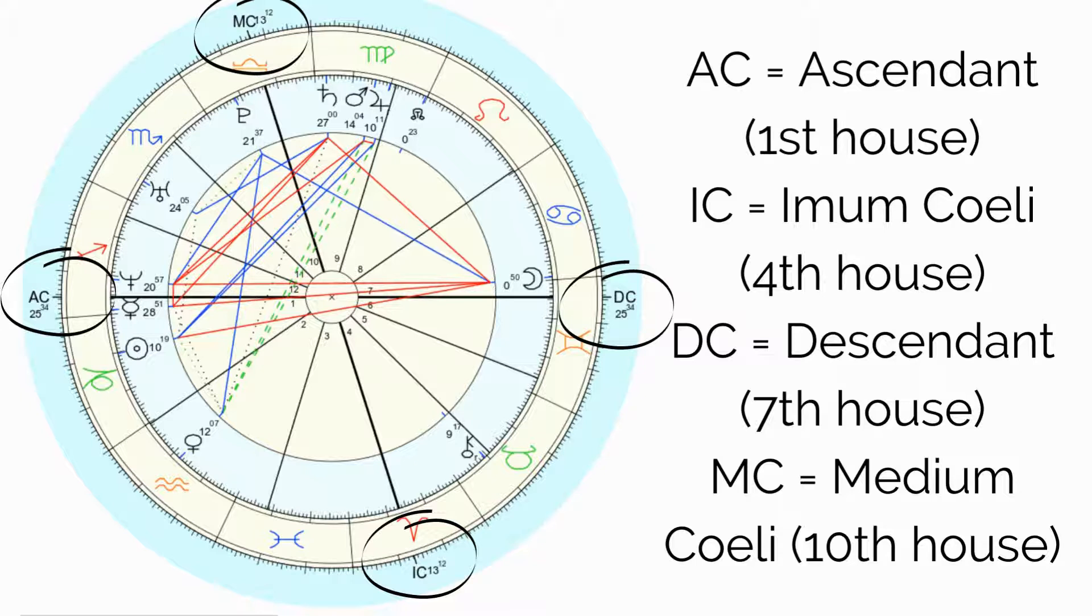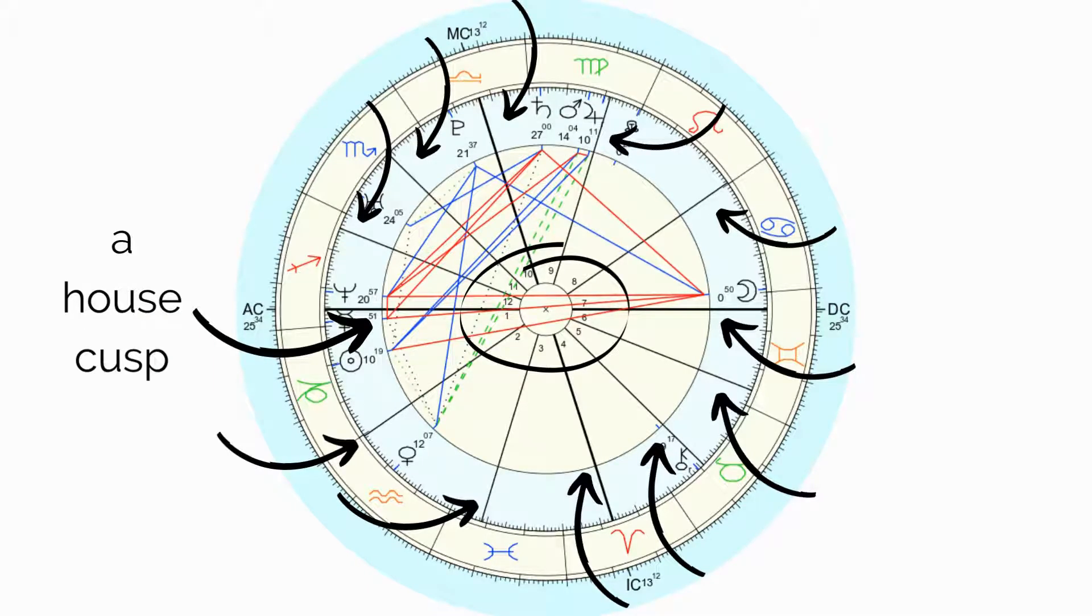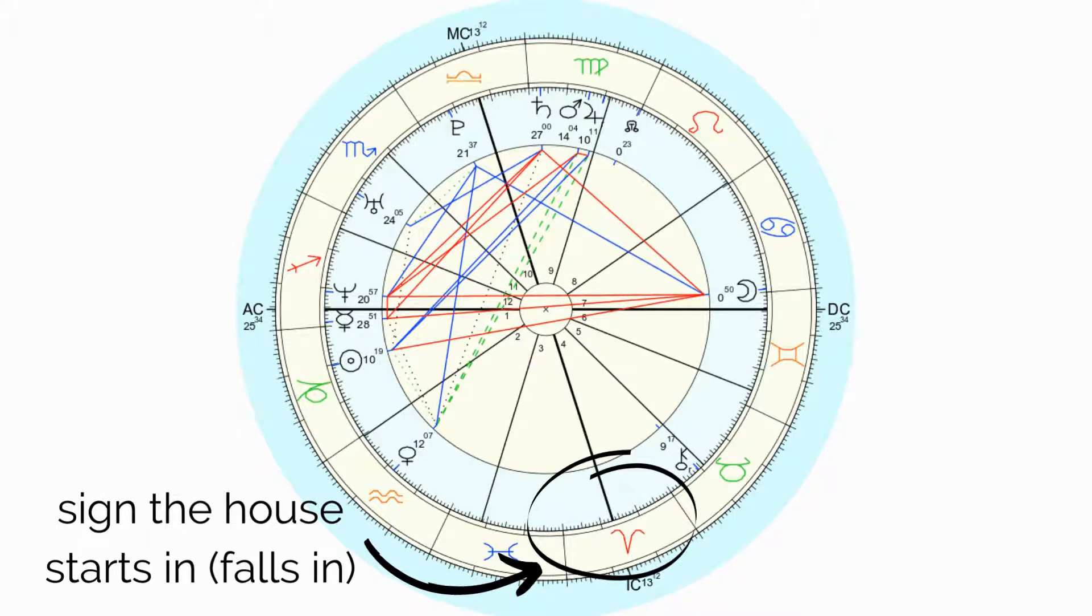AC stands for Ascendant, IC stands for Imum Coeli, DC stands for Descendant, and MC stands for Medium Coeli. Using the Placidus house system, Ascendant is the first house cusp, Imum Coeli is the fourth house cusp, Descendant is the seventh house cusp, and Medium Coeli is the tenth house cusp. Each black line going from the center to the zodiac signs represents a house cusp. The house begins at that line and ends at the next line. The houses are labeled on the inner part of the wheel.